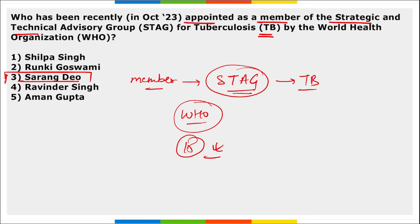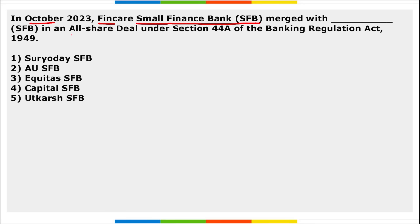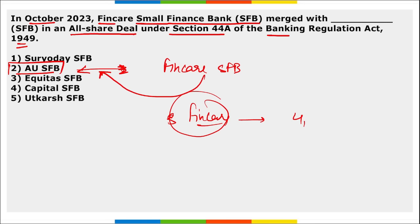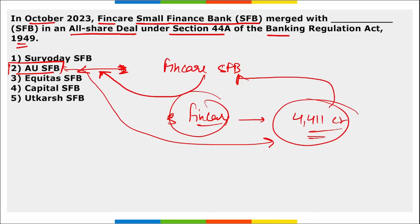In October, Fincare Small Finance Bank merged with AU Small Finance Bank in an all-share deal under Section 44A of the Banking Regulation Act, 1949. AU Small Finance Bank will acquire Fincare Small Finance Bank in an all-stock transaction valued at 4,411 crore rupees. Fincare Small Finance Bank will be merged into AU Small Finance Bank.